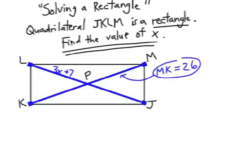This time we're going to solve a rectangle. We have rectangle JKLM. We're trying to find the value of X and notice that we have some diagonals labeled. The entire diagonal MK is 26.